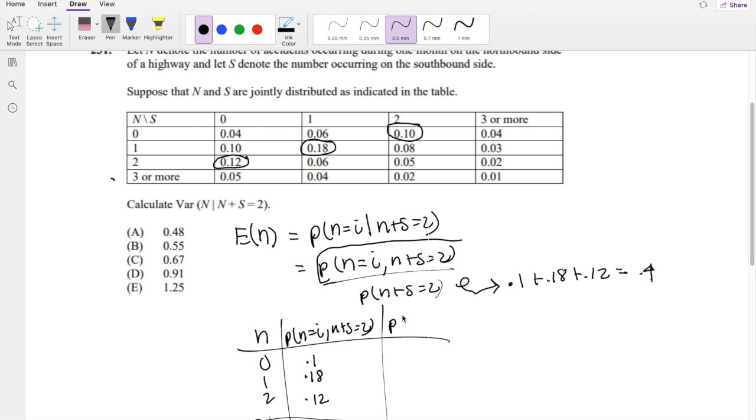So the conditional probability of n equals i, n plus s equals 2, over the probability that n plus s equals 2, is just taking that number we took earlier, dividing by the whole total, n plus s equals 2. So this is what you get.